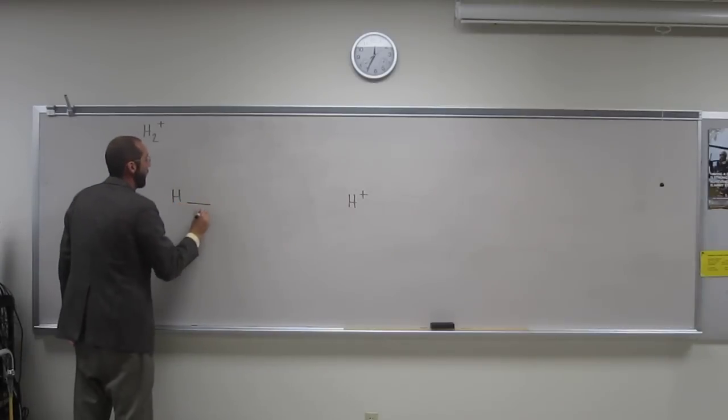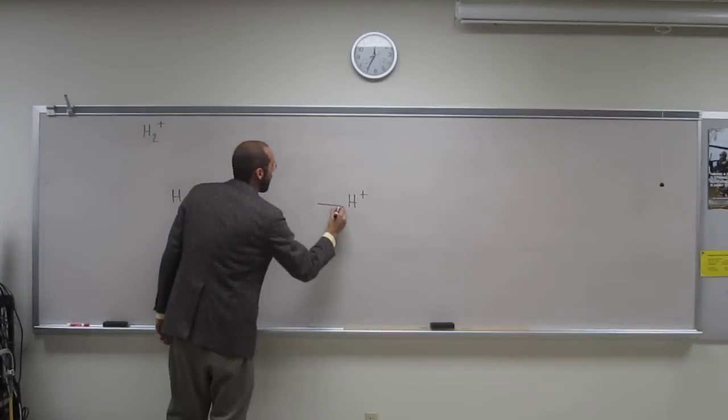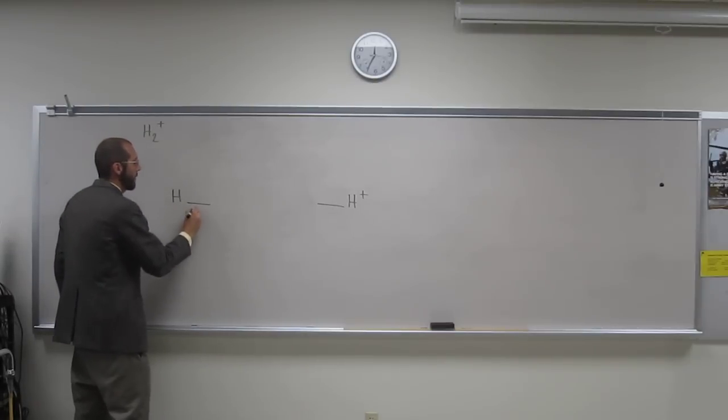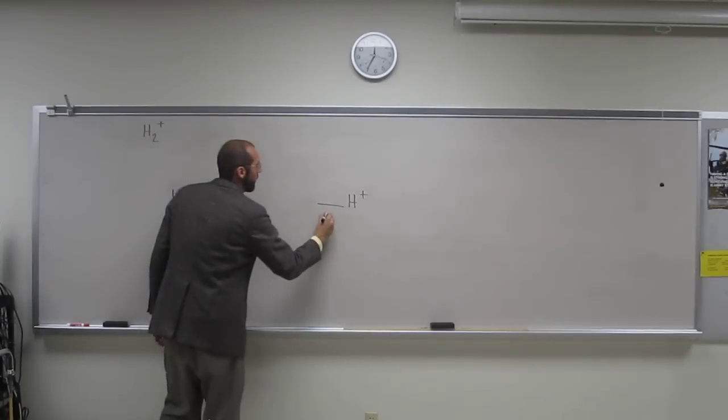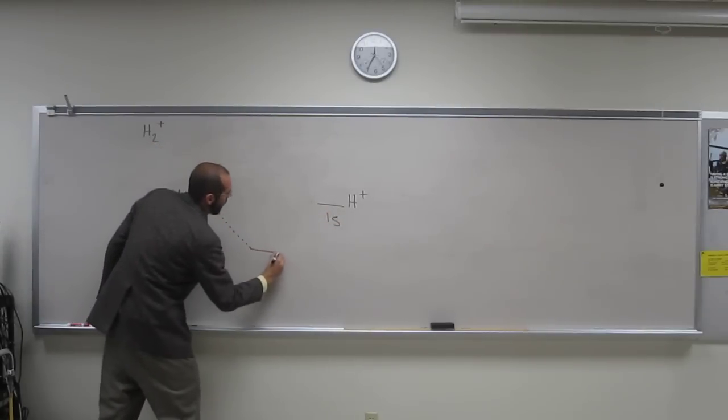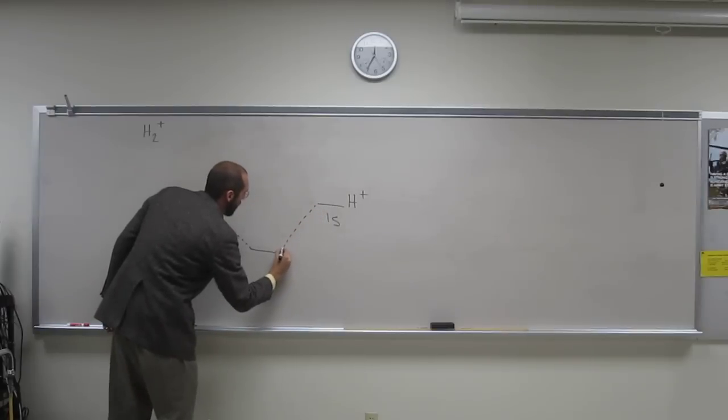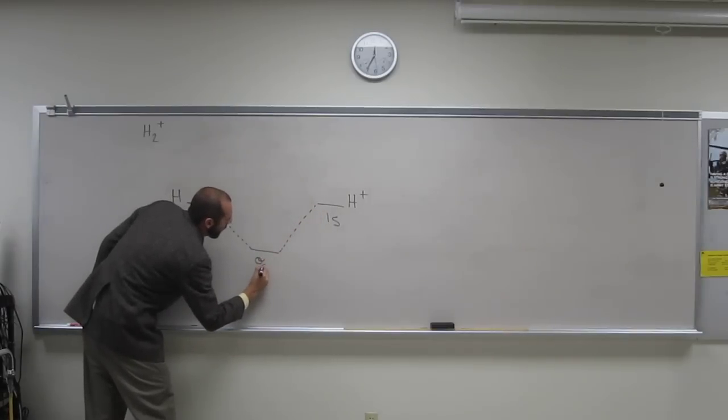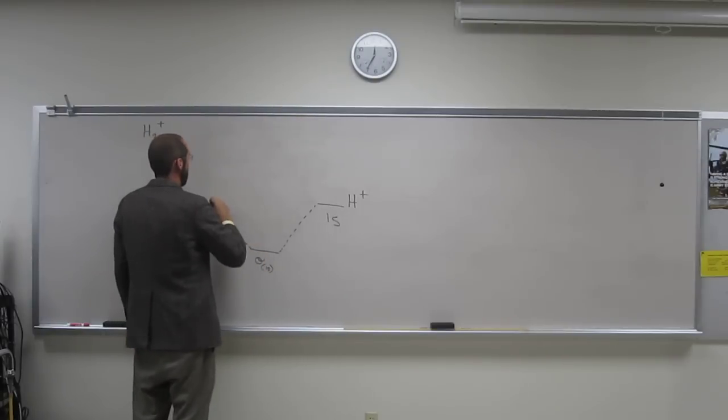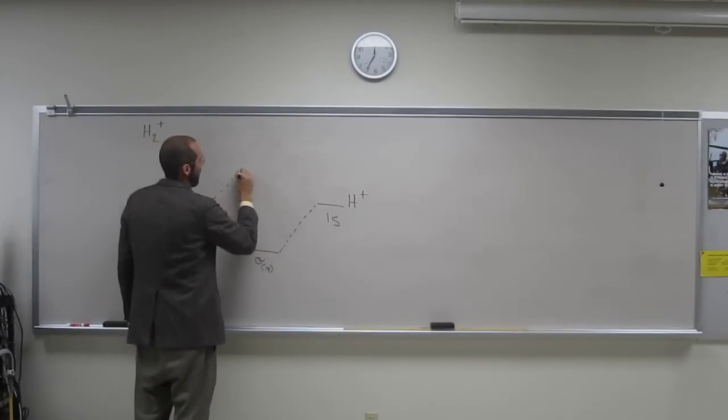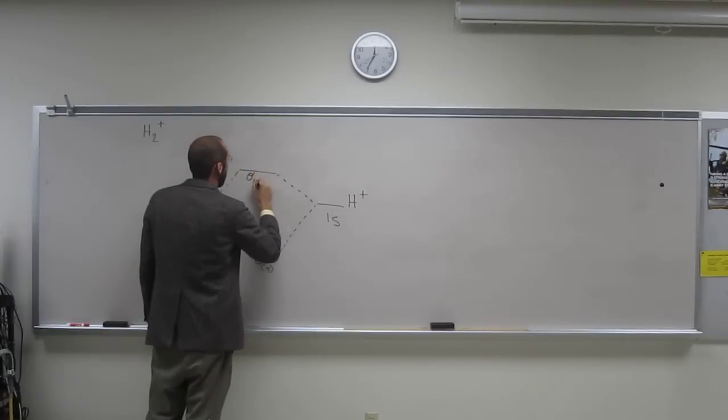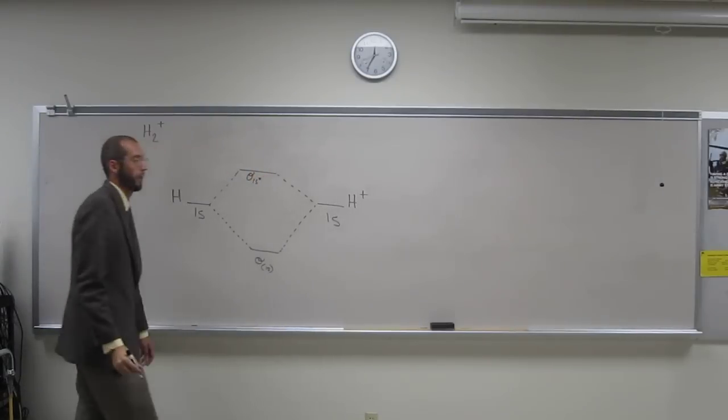When we do molecular orbital theory, recall each of these has its 1s orbital, and then it can make the molecular orbitals: the sigma 1s and the sigma 1s star orbitals. Remember that.